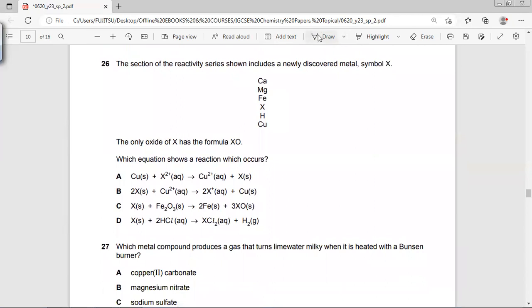The section of the reactivity series shown includes a newly discovered metal, symbol X. We can see the position of X in this reactivity series. X is less reactive than calcium, magnesium, and iron. It's more reactive than hydrogen and copper.